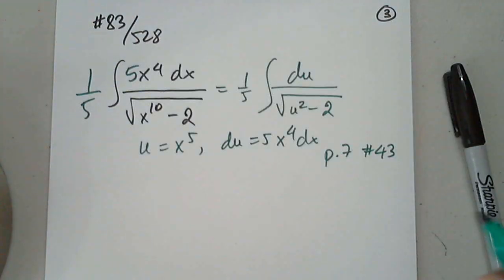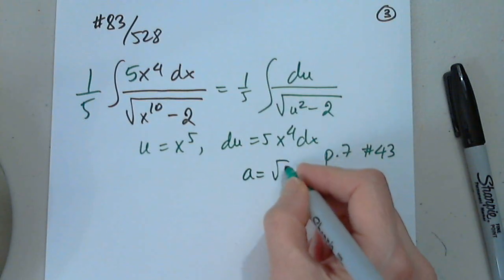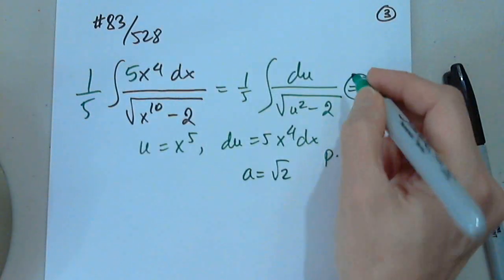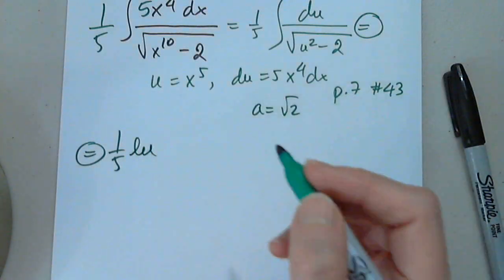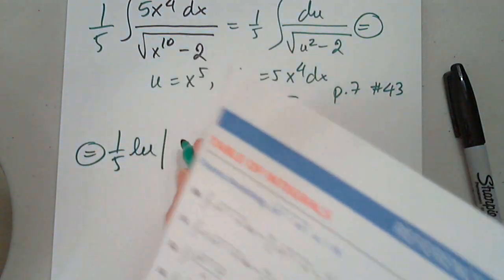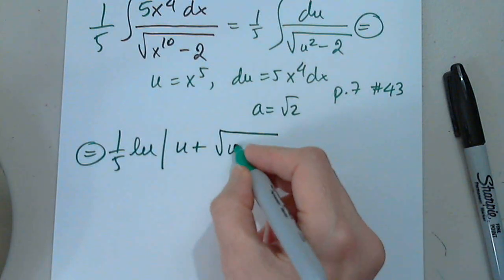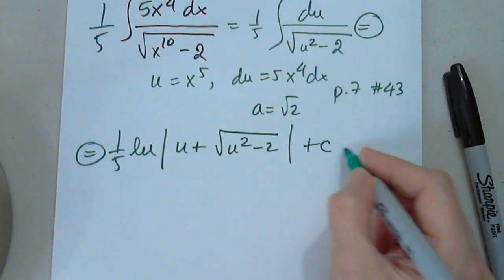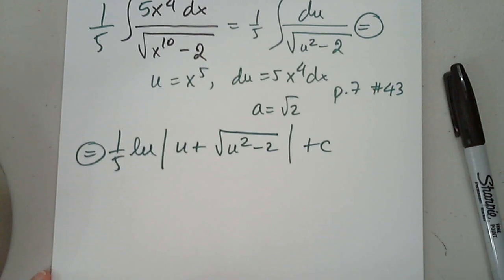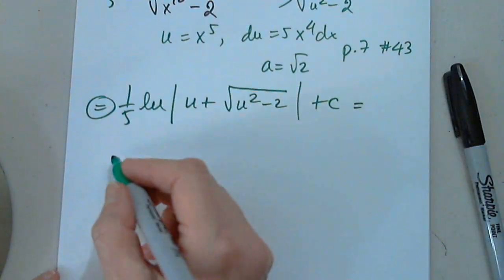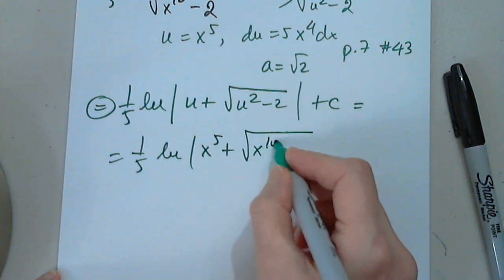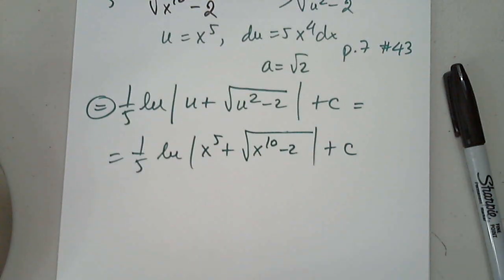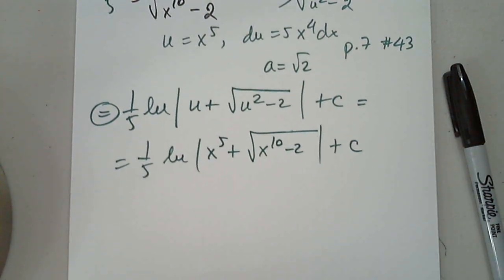Here a = √2. With (1/5) outside, we get (1/5) · ln |u + √(u² − 2)| + C. Replacing u with x⁵, the final answer is (1/5) · ln |x⁵ + √(x¹⁰ − 2)| + C. I hope this helps — thank you.